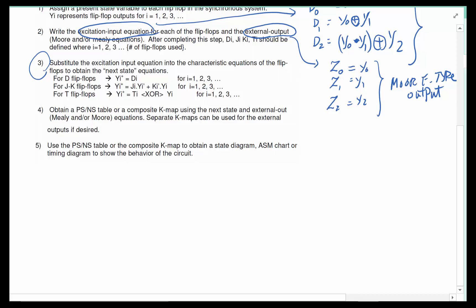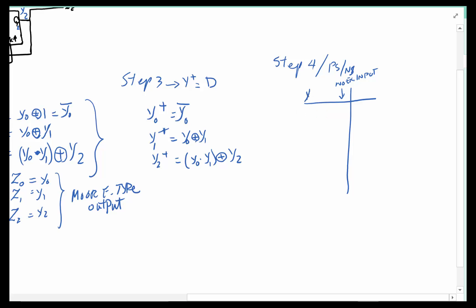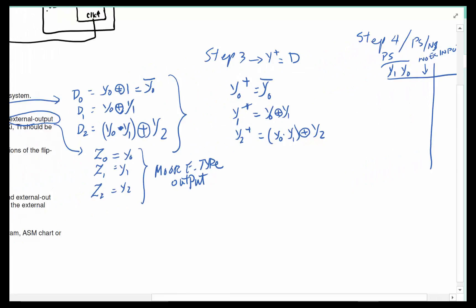Now we move to step 4, which says to obtain the present state / next state table. We're going to focus on the present state / next state table here. Since there is no external input, there is nothing to put in an input column, but we do have present state variables y0, y1, and y2.